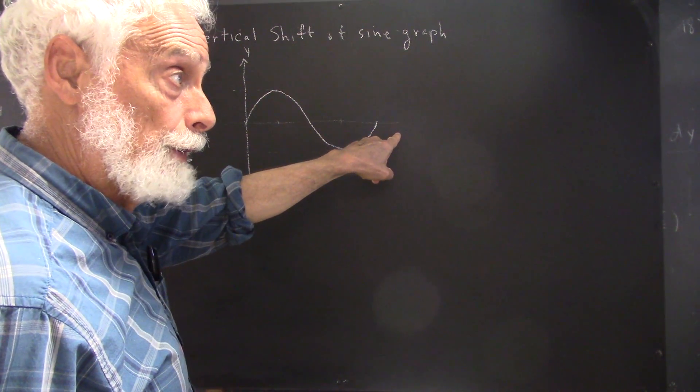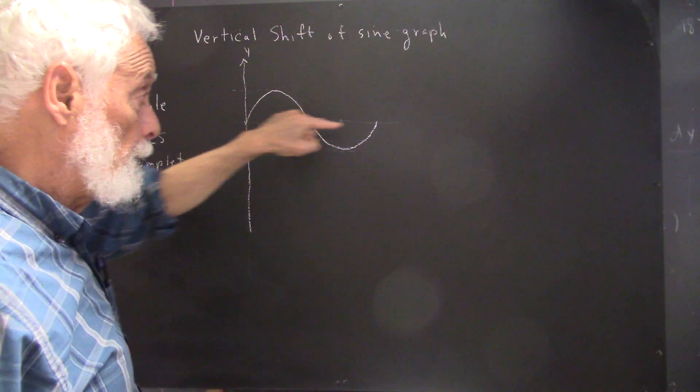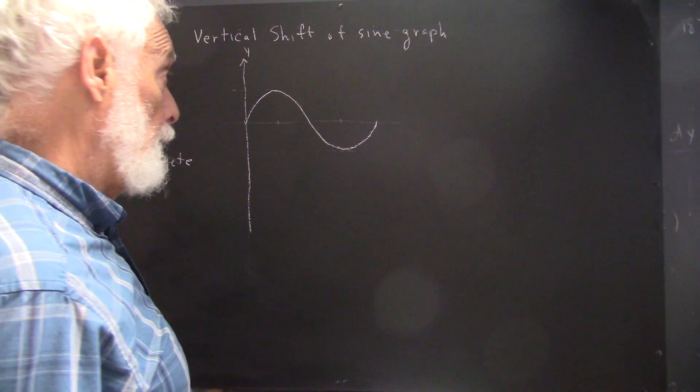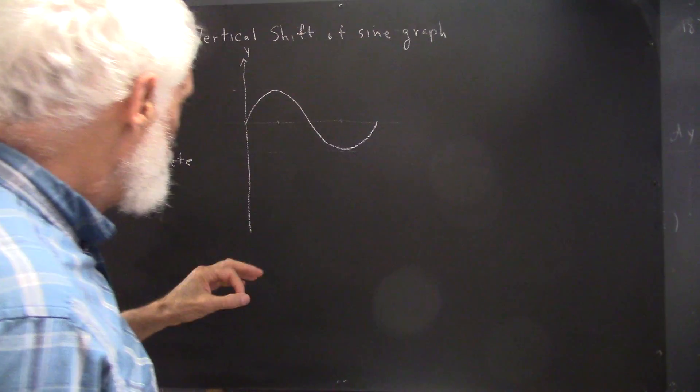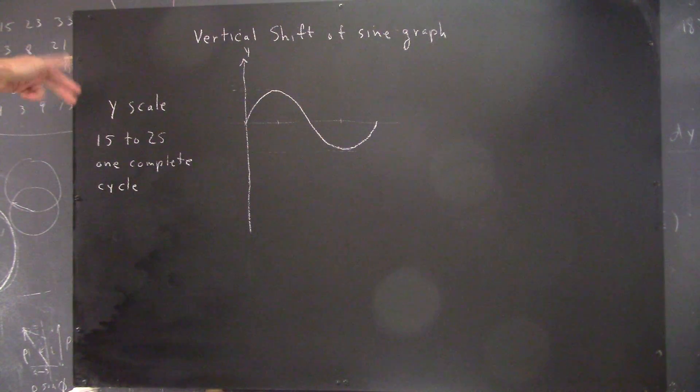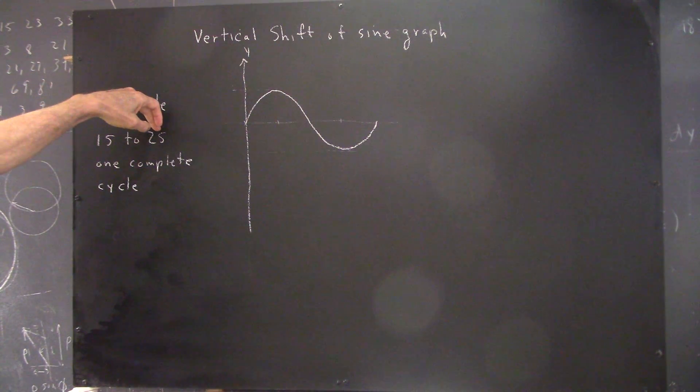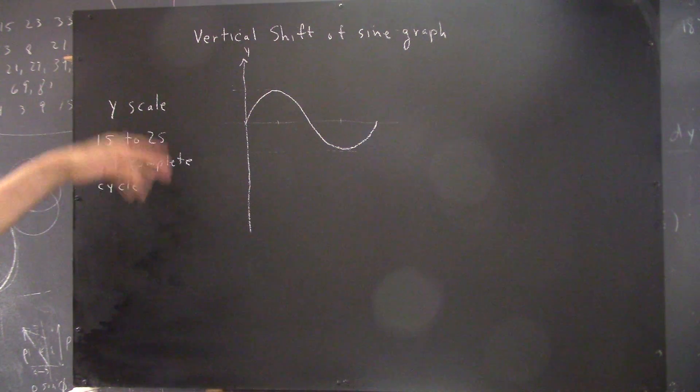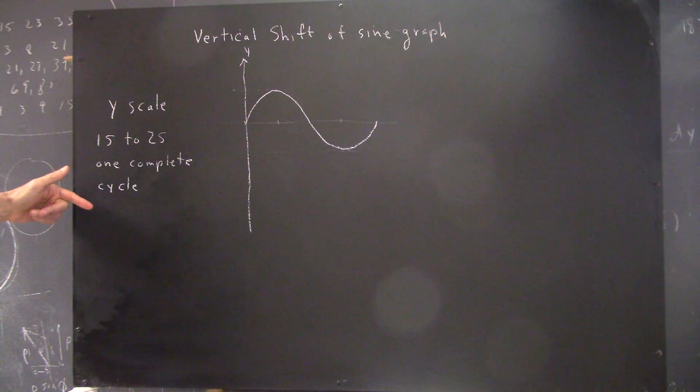Because I don't have an arrow on this axis, and as it turns out, I'm not going to use this for the horizontal axis of my graph, for reasons that we'll see in a minute. Well, here we are. We want the y-scale to go from 15 to 25 as the graph goes through one complete cycle. How are we going to achieve that?